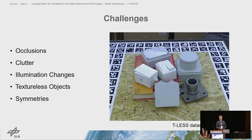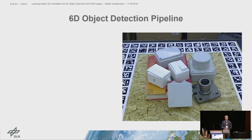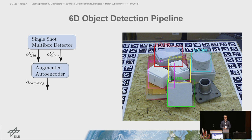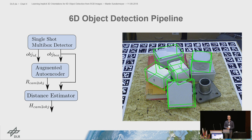Our 6D object detection pipeline consists of three parts. First, a 2D object detector — here SSD — that detects all objects in the images and outputs bounding boxes. The resulting object crops are fed into our augmented autoencoder, which outputs an estimate of the orientation. Finally, we have a projective distance estimate that yields a full 6D pose. The focus in this work is on the augmented autoencoder.